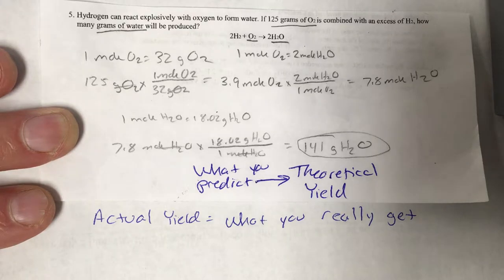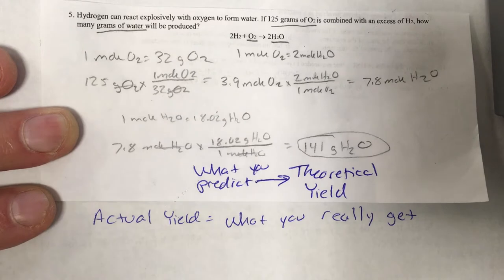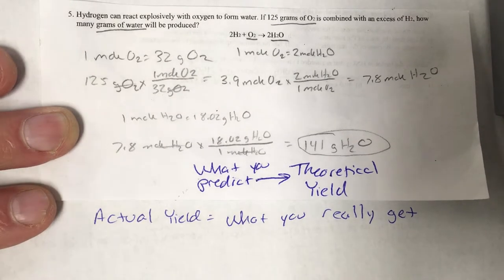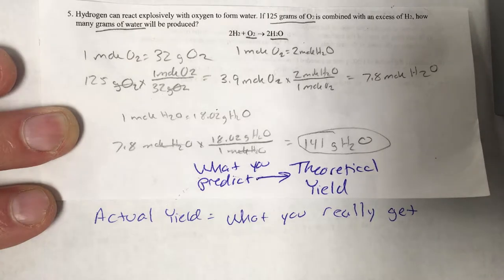So let's say we run this experiment and I am just going to make up a number here. I'm not actually going to get out hydrogen and oxygen and do the experiment, I'm just going to make up a number here. Let's say we actually do this experiment with 125 grams of O2 and in the end we get 122 grams.